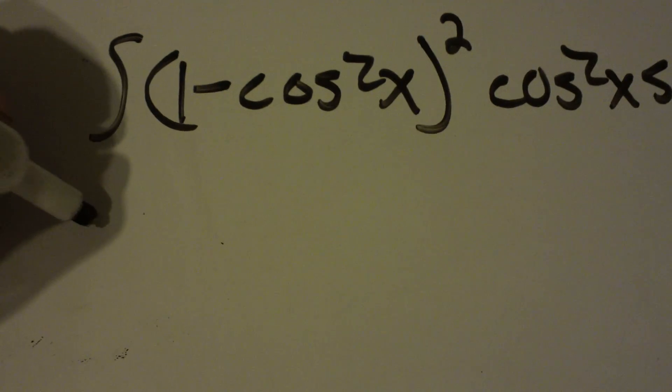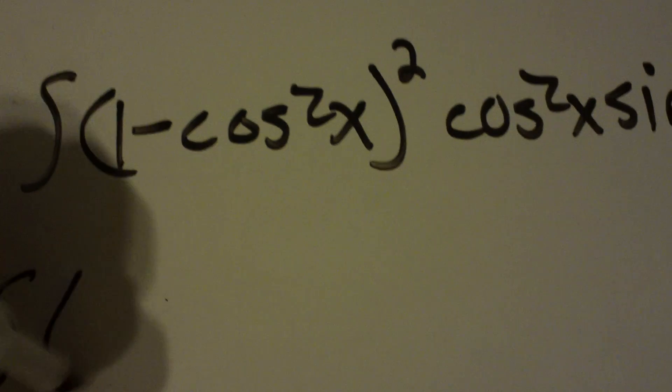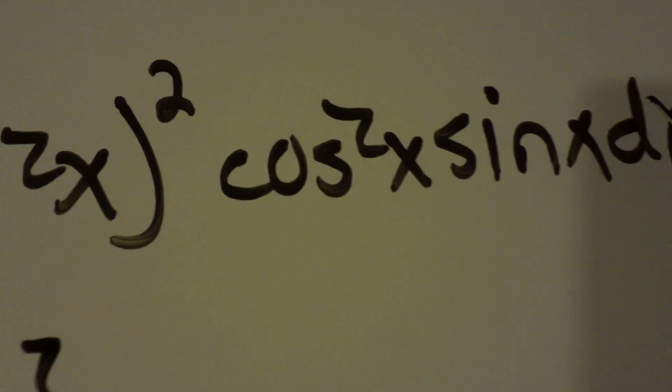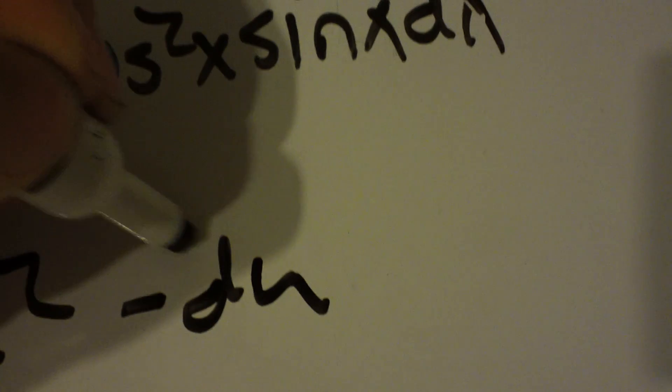So, first thing we're going to do is plug in 1 minus cosine squared x, u equals cosine. So, that would be a u squared. Cosine x, here's u squared again. And sine x dx is a negative du.